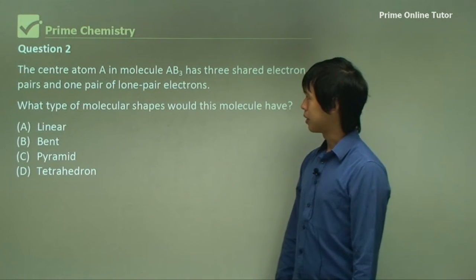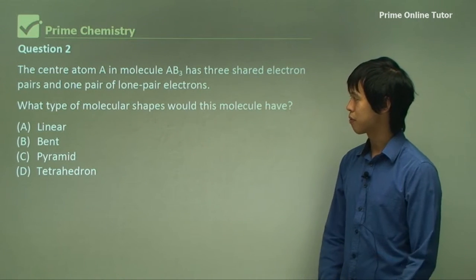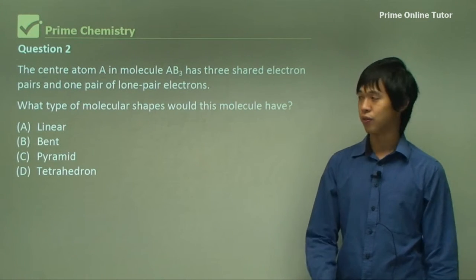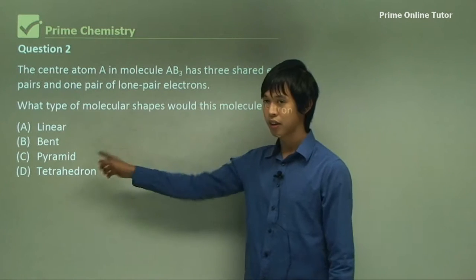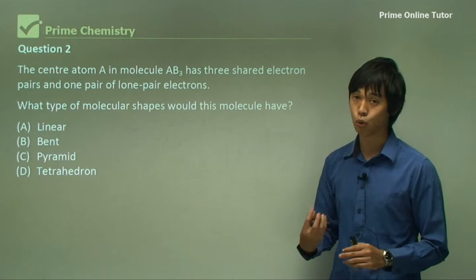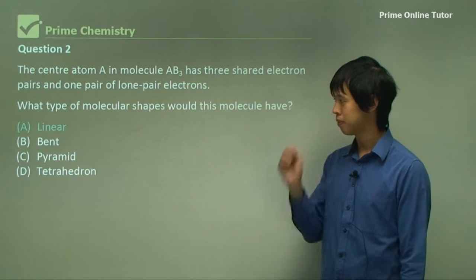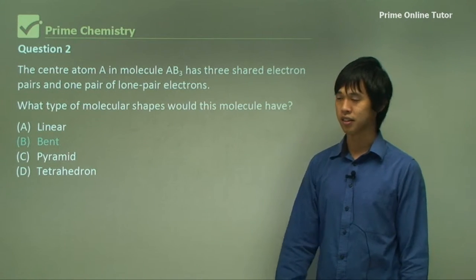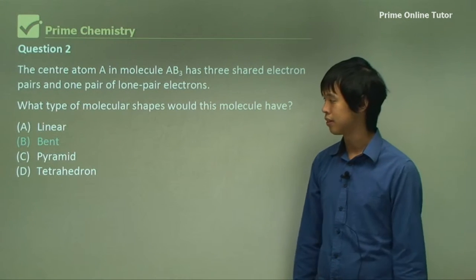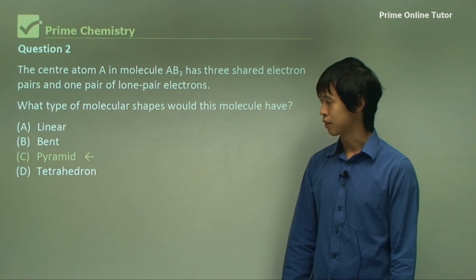The center atom A in molecule AB3 has three shared electron pairs and one lone pair. What type of molecular shape would this molecule have? Well, it's very likely going to be pyramid, not tetrahedron, because we've got a lone pair. Remember, lone pairs exert slightly more force than a bonded pair, so it's not likely to be a tetrahedron. So it's not linear, it's not bent, because these two are two-dimensional shapes. We've got an AB3 type molecule, so it won't be two-dimensional. It's not tetrahedral because of the lone pair, so it's going to be a pyramid.